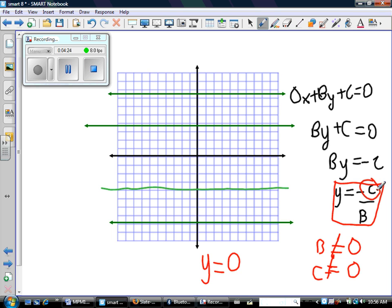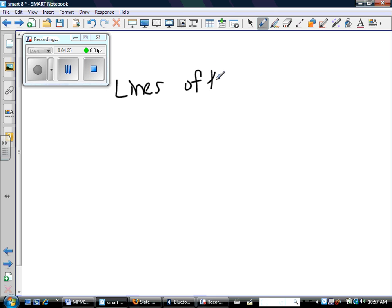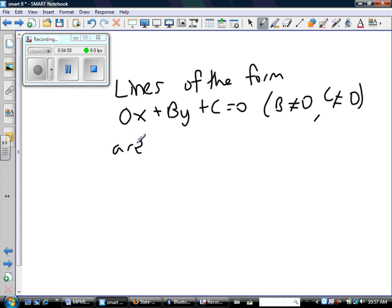So if you really want the best answer possible to this question, you would say something like this: Lines of the form 0x + By + C = 0, and we'll remind the reader of these important restrictions, are horizontal lines at y = -C/B.